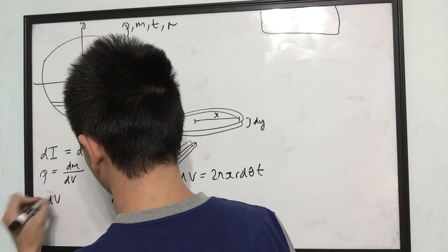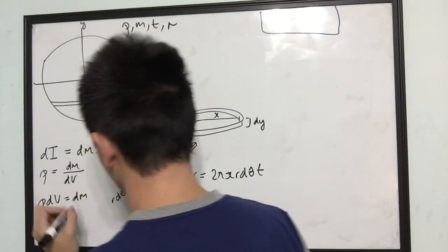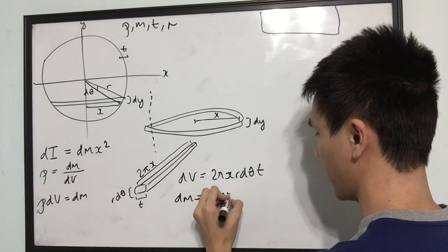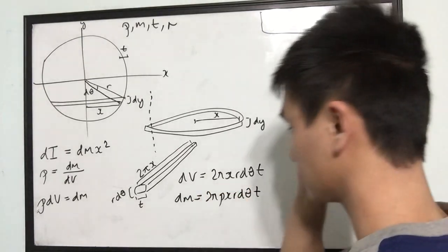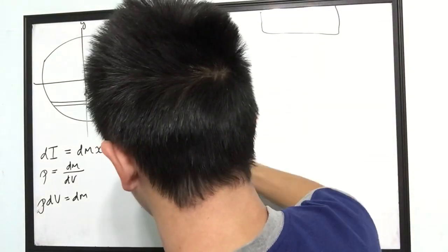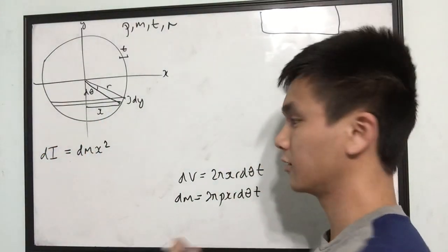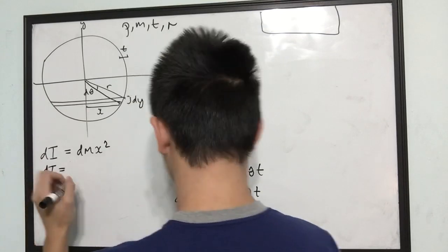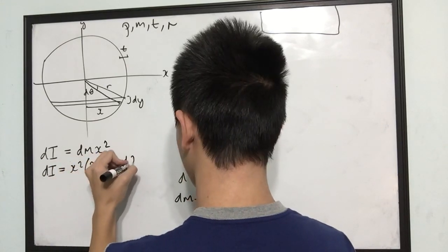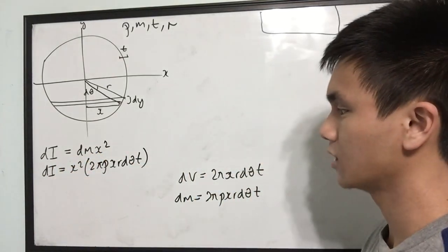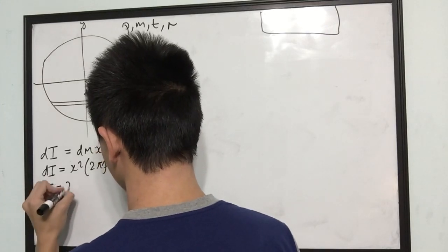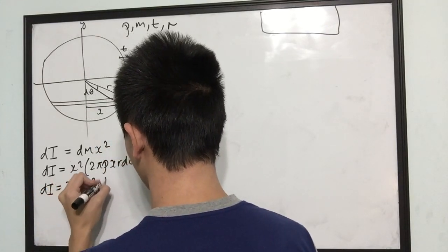So dm = rho·dV = 2π·rho·x·r·dθ·t. Plugging into our dI equation: dI = x² · dm = x² · 2π·rho·x·r·dθ·t. Collecting like terms, dI = 2π·rho·x³·r·dθ·t.